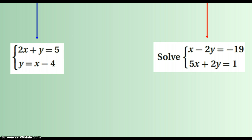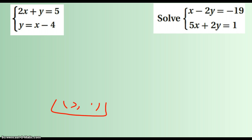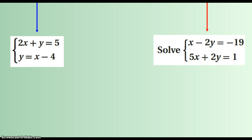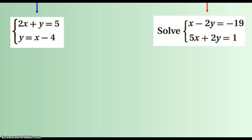However, if you look over to the right, now we've got something that is definitely not solved for. We don't have a variable that's solved for. We could solve for x. For instance, I could, in the top one here, add 2y to both sides here, and I would have x solved for.